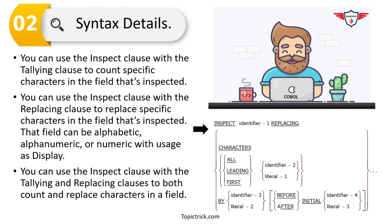Before moving to the examples, here are a few important points. If you want to count the number of characters in a string, use INSPECT with the TALLYING option. If you want to replace a specific character, use INSPECT with the REPLACING clause. You can use alphabetic, alphanumeric, or numeric data types, but numeric fields must have USAGE DISPLAY — not COMP-3. Finally, you can combine TALLYING and REPLACING in a single INSPECT statement to both count and replace characters.